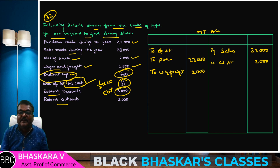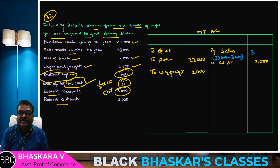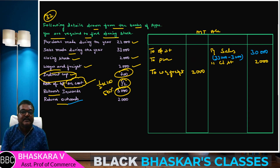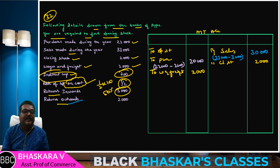From sales we need to deduct sales returns — net sales after sales return. Also, return outwards means purchase returns — goods returned due to some reasons. So purchase returns are deducted from purchases. Net purchases after return outwards and net sales after sales returns are used.